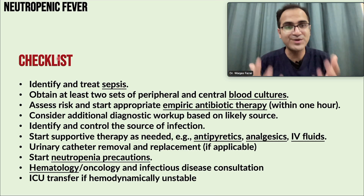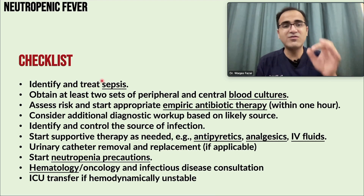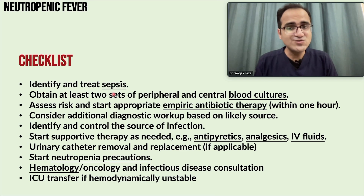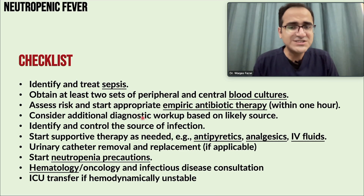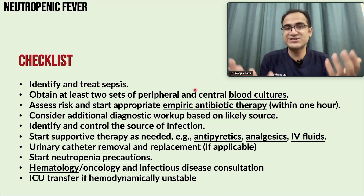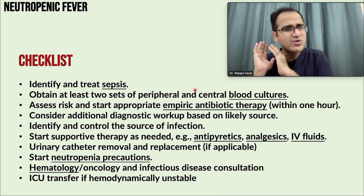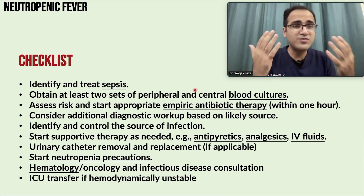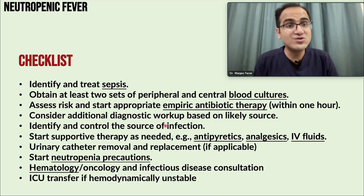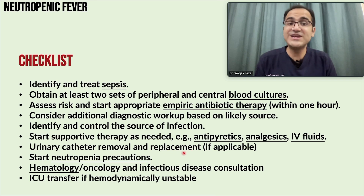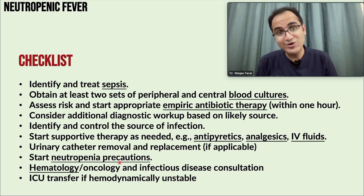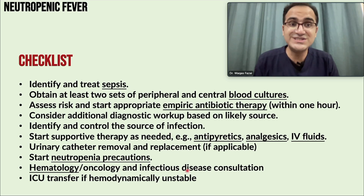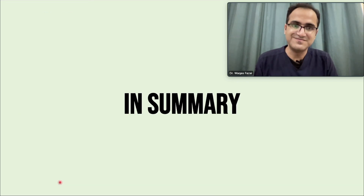A checklist for neutropenic fever: identify and treat sepsis; obtain at least two sets of peripheral and central blood cultures; assess risk and start empiric antibiotic therapy within one hour; consider additional diagnostic workup for the likely source — urine cultures, chest X-ray, imaging for abscesses; identify and control the source of infection; start supportive care — antipyretics, analgesics, IV fluids, urinary catheter removal if it is the infection source; implement neutropenia precautions including HEPA filters and isolation; consult hematology-oncology and infectious disease teams; transfer to ICU if hemodynamic instability develops.